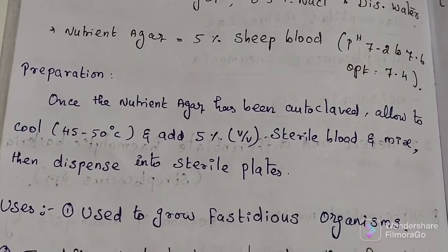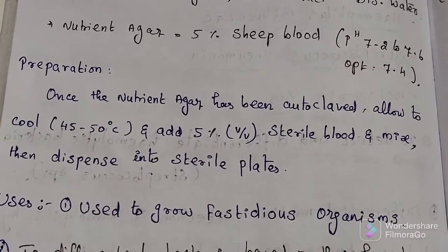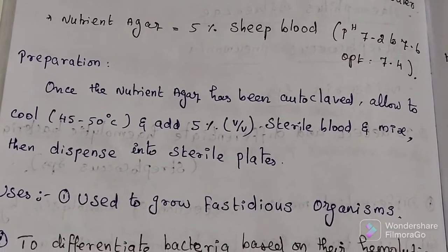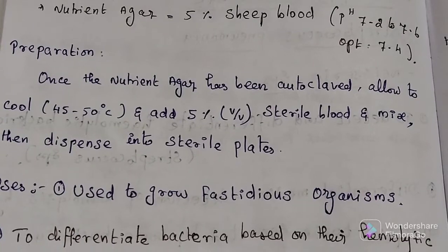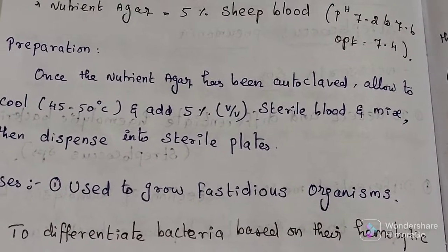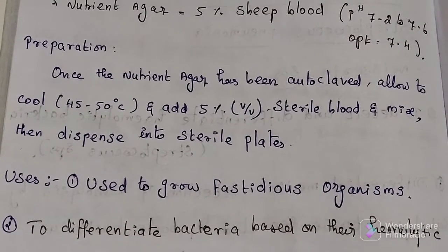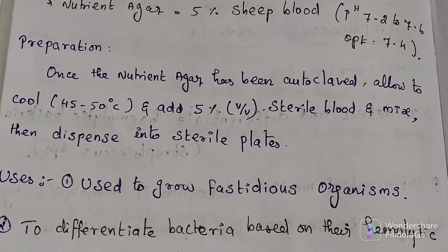Preparation of blood agar medium. Once nutrient agar has been autoclaved, allowed to cool to 45 to 50 degrees Celsius, then we will add 5 percent of sterile blood. Then we will mix it, then dispense into a sterile plate.